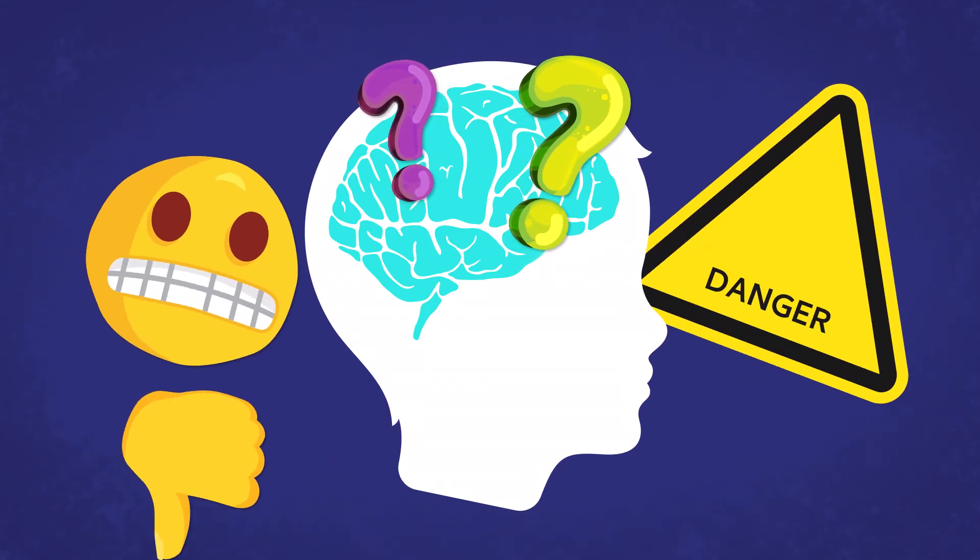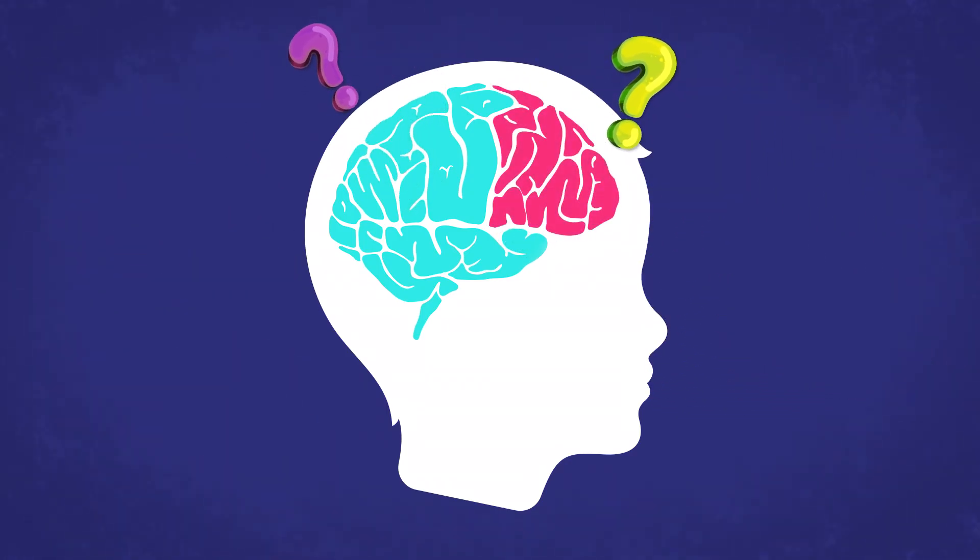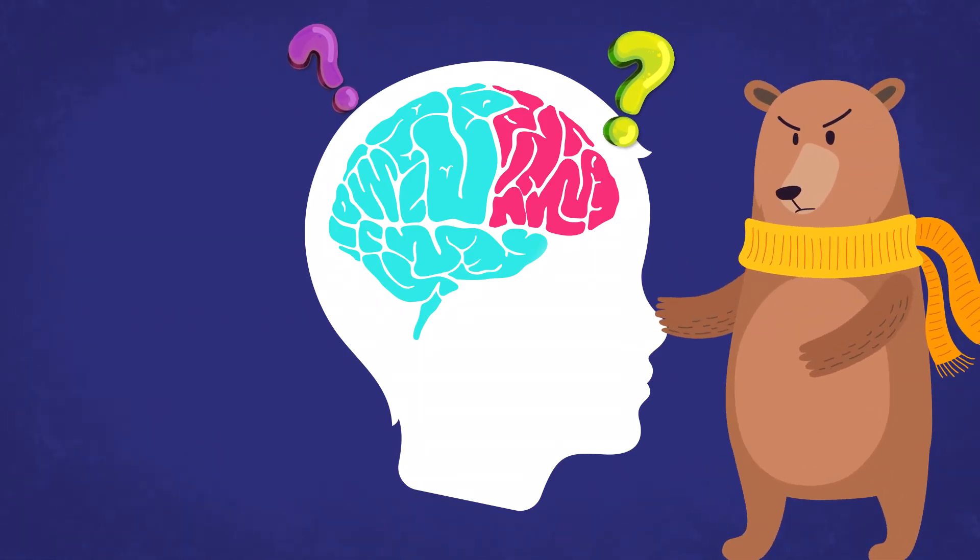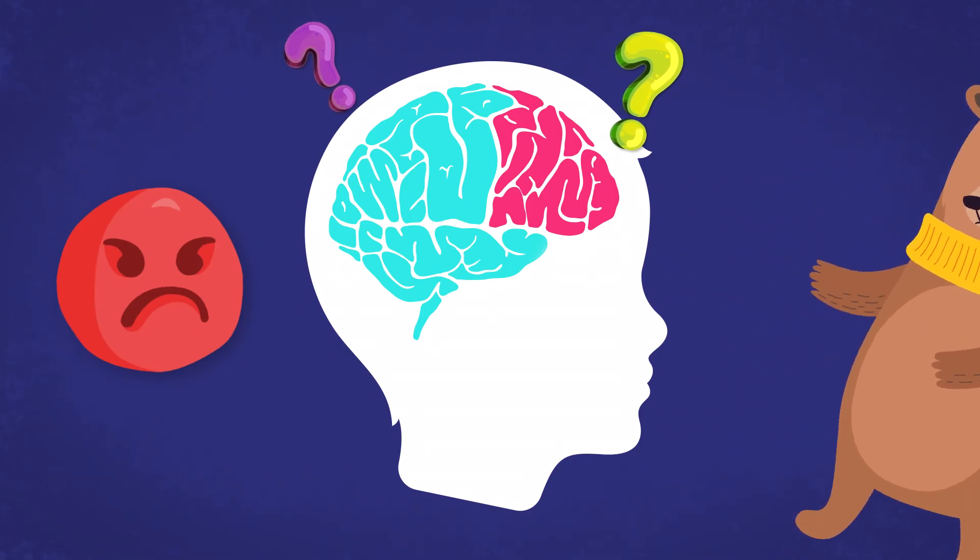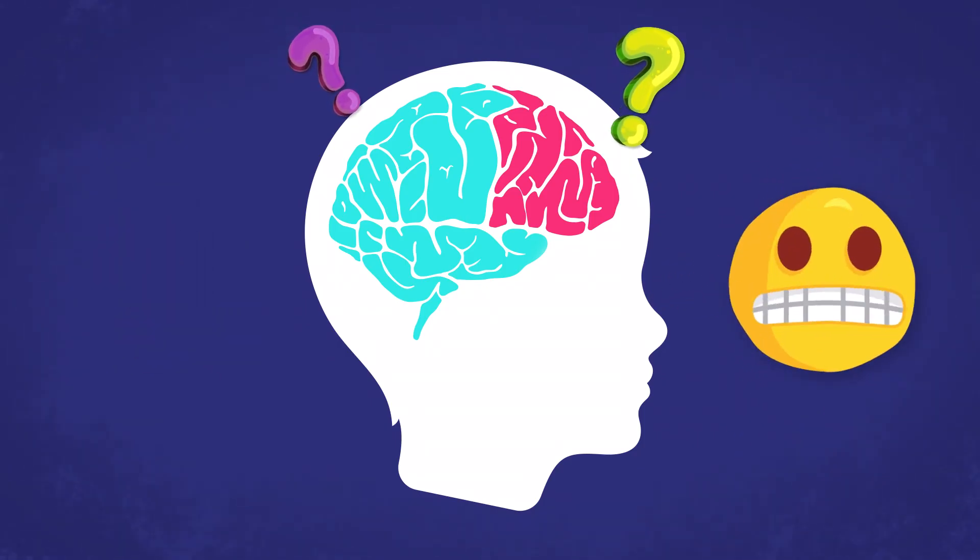So while the smart brain turning off can be really helpful in certain situations, like needing to run away quickly from a bear or an angry dog, it wouldn't be so helpful in times when we have big emotions.